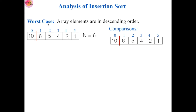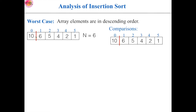Now let's see how to find out the worst case. The worst case will occur when the array elements are in descending order, because if the elements are entirely in reverse order, then the algorithm will perform the maximum number of operations. So this reversely sorted array will be considered as input in this worst case scenario. With this reversely sorted array, we have to find out what is the total number of comparisons performed by this algorithm.